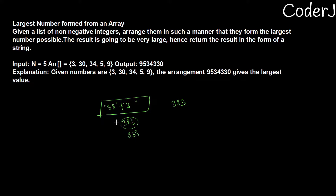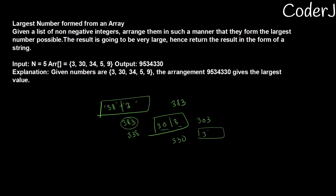The first thing that might come to mind is: simply sort this array in descending order and we'll always get the largest possible number. Sure, it might work in some cases — it works here. But what if the elements were 30 and 3? If you sort in descending order, the array would be [30, 3] and your answer would be 303, but the actual answer is 330. If you put 3 first and then 30, that gives you the largest number possible.